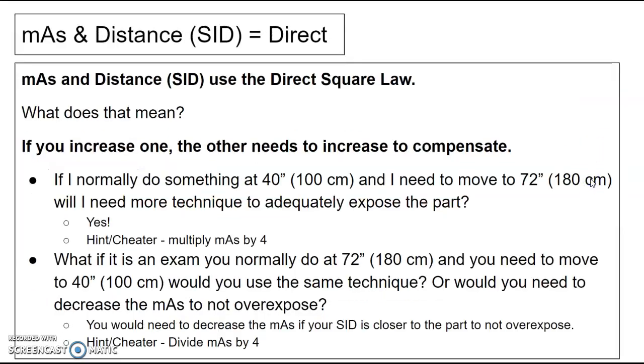So mAs and distance use the direct square law. What does that mean? Well, if you increase one, then the other needs to increase to compensate. So if we increase our SID, we're going to have to increase our mAs and vice versa. So if you decrease your SID, you're going to decrease your mAs.